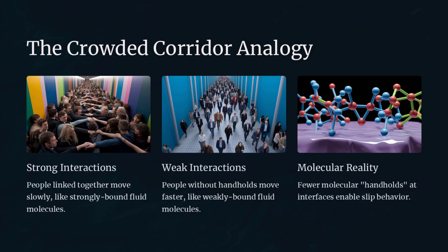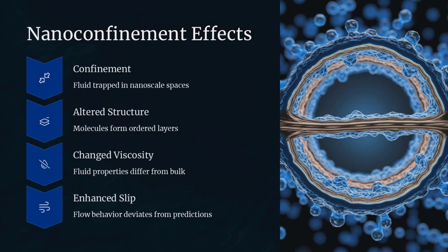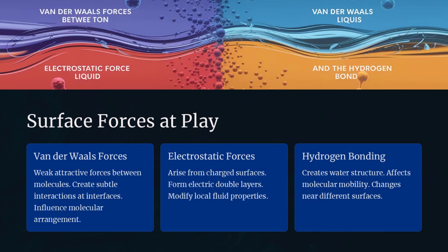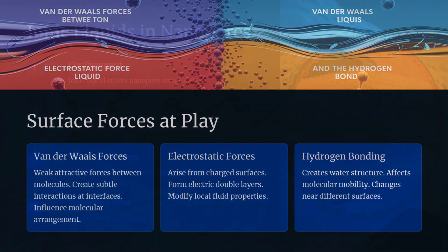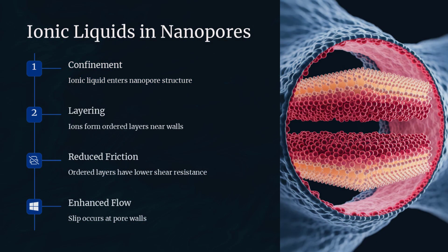Nanoconfinement alters fluid structure and viscosity within a few molecular layers of the wall, modifying flow behavior. Van der Waals and electrostatic forces can create depletion zones or lubricating layers that reduce friction. These altered layers exhibit effective viscosities vastly different from the bulk, enabling significant slip. Consequently, the macroscopic flow profile emerges from a complex interplay of confinement and surface forces. Ionic liquids in nanopores form ordered layers with reduced shear resistance, facilitating slip at the pore walls — like a thin layer of air cushioning a puck on an air hockey table, allowing near-frictionless movement.